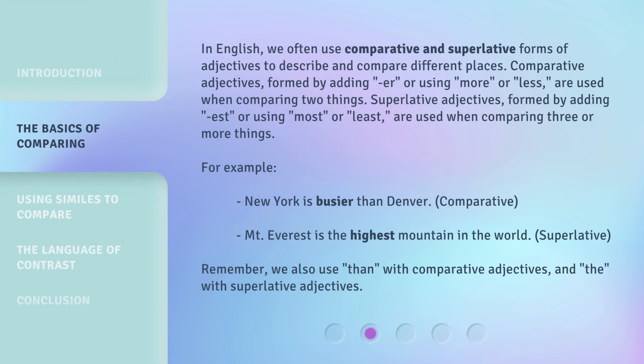In English, we often use comparative and superlative forms of adjectives to describe and compare different places. Comparative adjectives, formed by adding -er or using 'more' or 'less,' are used when comparing two things. Superlative adjectives, formed by adding -est or using 'most' or 'least,' are used when comparing three or more things.